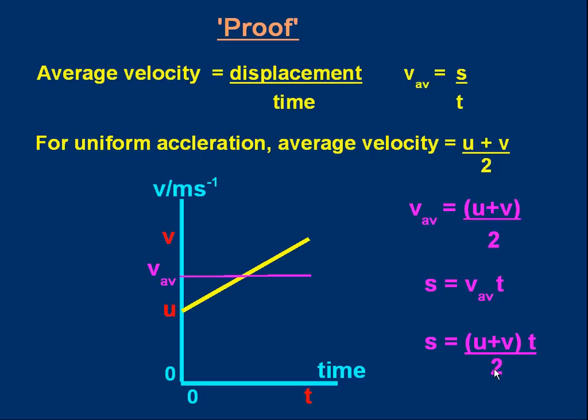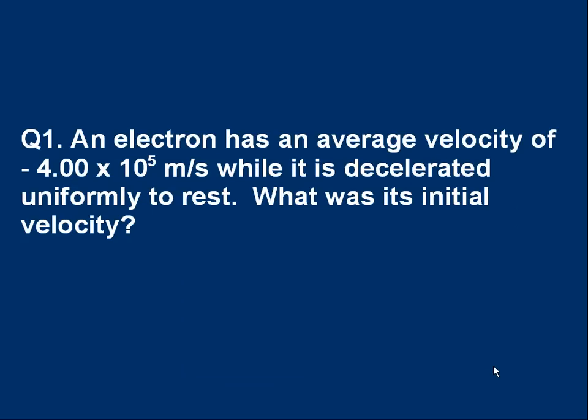Time to do some problems. Here's the first problem for you. An electron has an average velocity of minus 4.00 times 10 to the 5 meters per second while it is decelerated uniformly to rest. What was its initial velocity? Pause and think about that. Well, if you remember what we said a couple of slides ago, in this situation, the initial velocity is simply twice the average velocity. So without really doing any calculations, all we have to do is double our average. It's minus 8.00 times 10 to the 5 meters per second. Only true because it's uniform deceleration and we finish at rest. One of the velocities is zero.